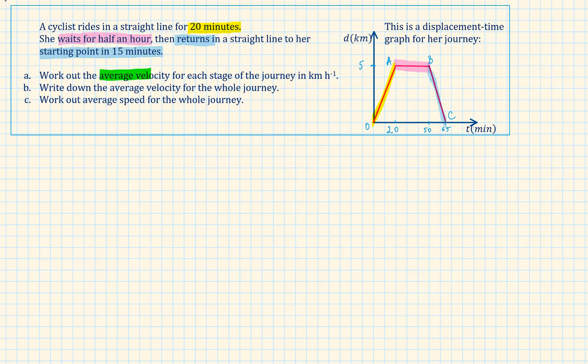Work out the average velocity for each stage of the journey in km per hour. The journey from O to A has been travelled in 20 minutes. The displacement for this journey is 5 km. In this question, the displacement is represented by a lowercase d. Velocity is equal to displacement over time. 5 over 20 km per minute.